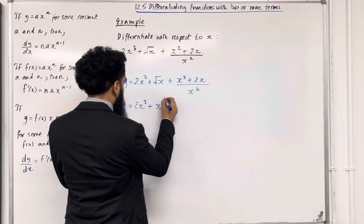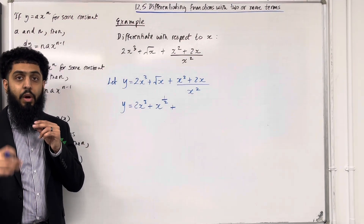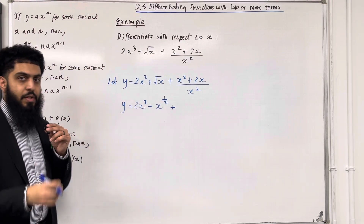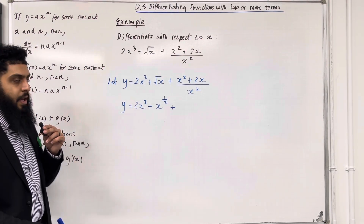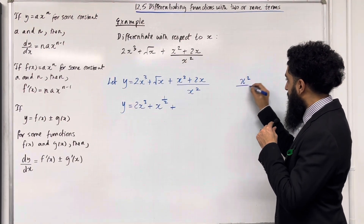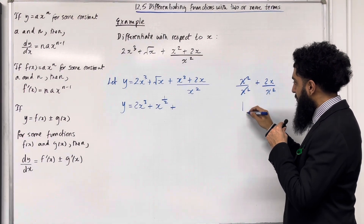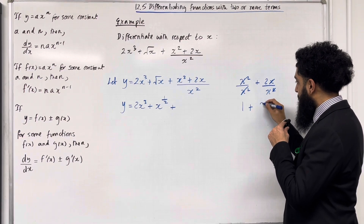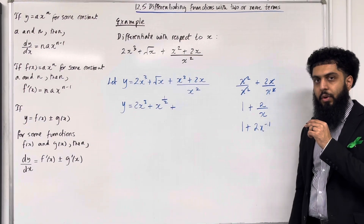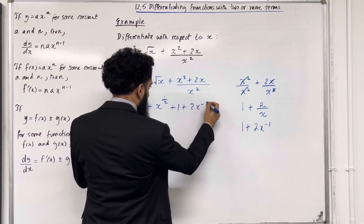√x is the same as x to the power of ½. The third term is a fraction. In Pure Mathematics Year 1, we do not cover a rule for differentiating a fraction, so we split it into two fractions and simplify each term using laws of indices. We have x²/x² plus 2x/x². The first term simplifies to 1, and the second simplifies to 2/x. Now 2/x can be rewritten as 2x⁻¹ using laws of indices. So we replace the fraction with 1 plus 2x⁻¹.